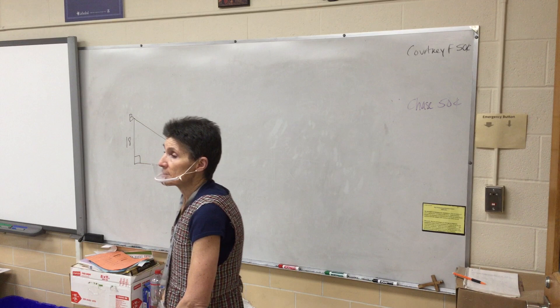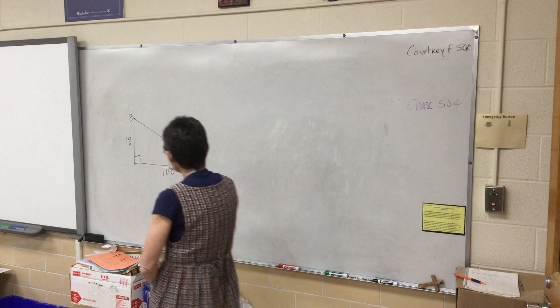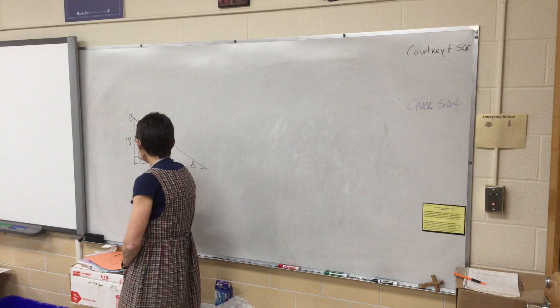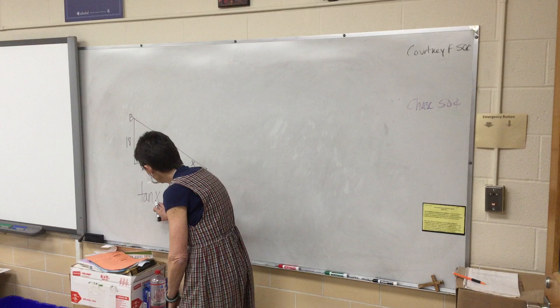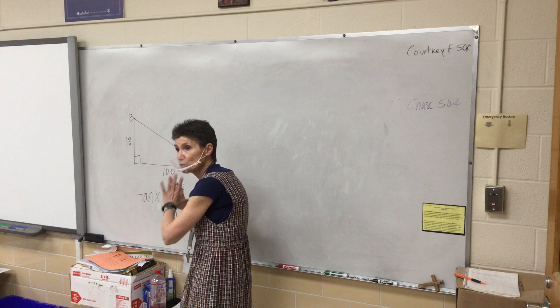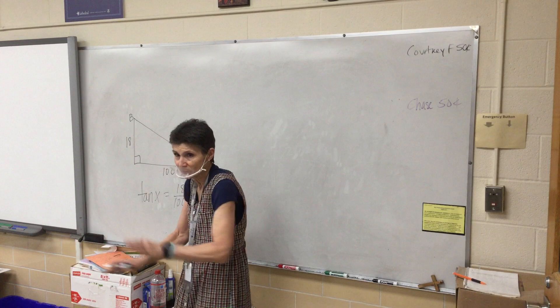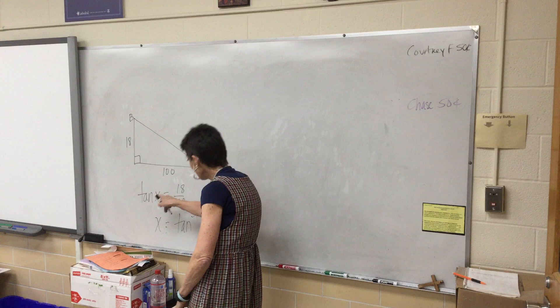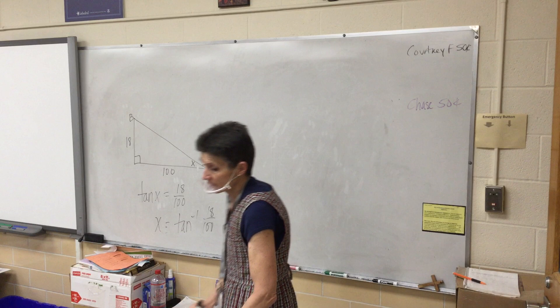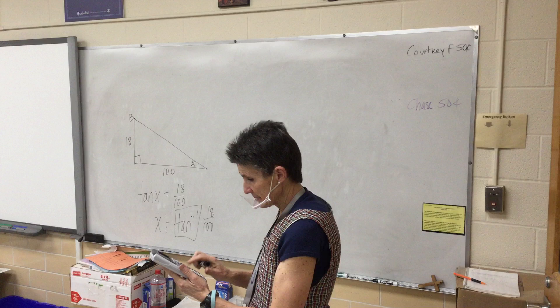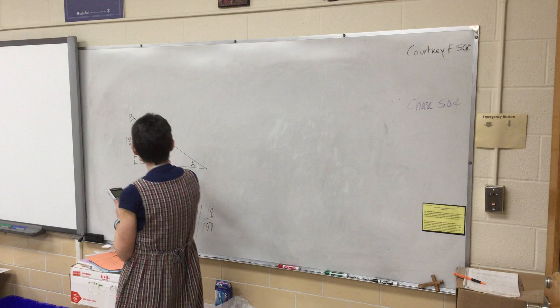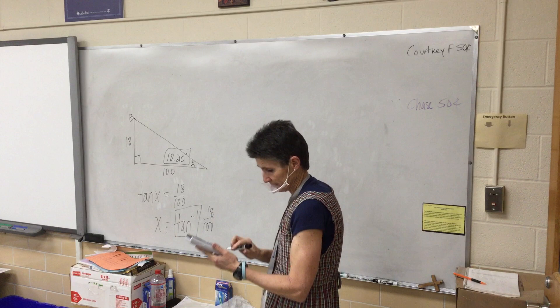Now write the equation. We've got opposite and adjacent, so use tangent. Tan x equals 18 over 100. When x is the angle, you go straight to the calculator — no algebra. Type: second tangent, 18 divided by 100. That gives 10.20 degrees.